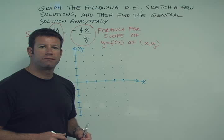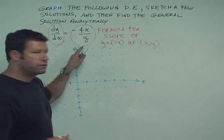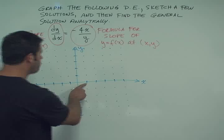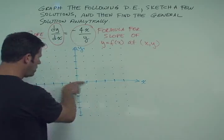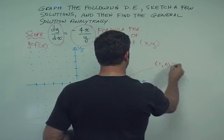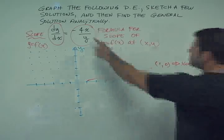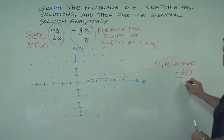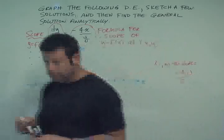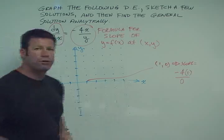Let's start with the point (0, 0). At (0, 0) we have 4 times 0 divided by 0, which is an undefined form. So we have no slope at (0, 0) — we'll just leave that empty. How about the point (1, 0)? The slope would be minus 4 times 1 divided by 0 — still undefined. In fact, the entire x-axis has y values of 0, so the entire x-axis is going to have no slope defined. So we just eliminated 11 points right off the bat.